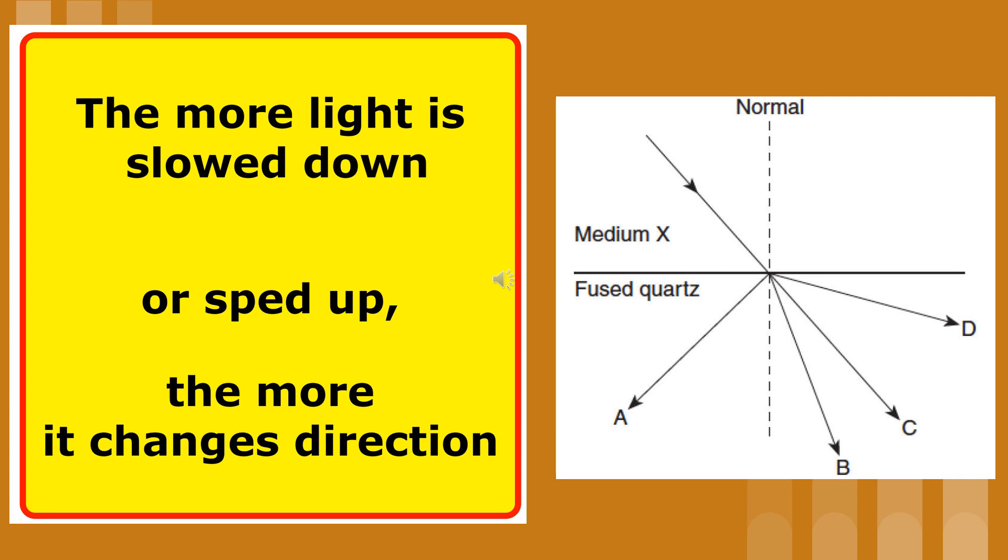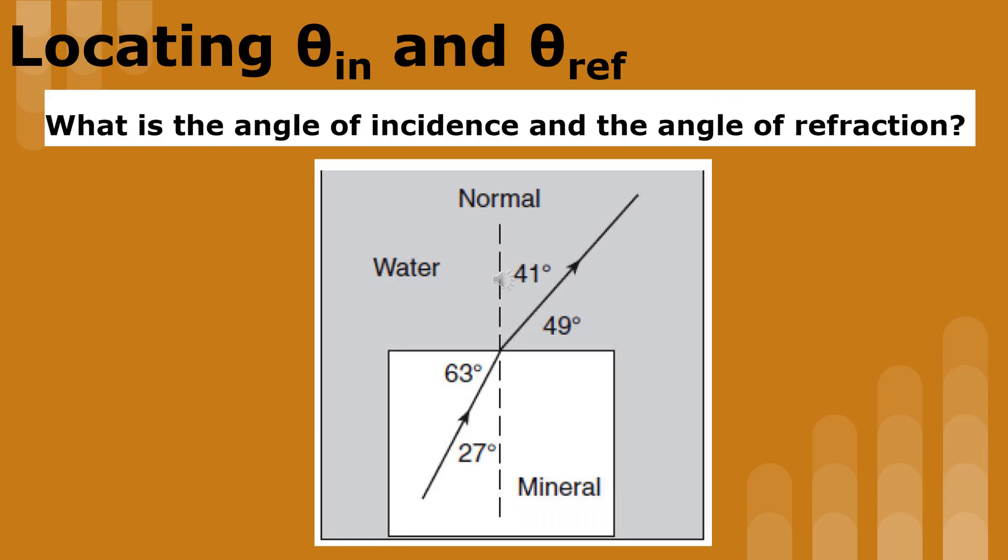If the bottom medium were a lot faster than top, the light ray would bend toward point D. If the bottom medium were slower than the top, the light ray would bend toward point B. The angle of incidence is the angle between the incoming ray and the normal. In this case, it's 27 degrees. The angle of refraction is the angle between the refracted ray and the normal. In this case, 41 degrees.